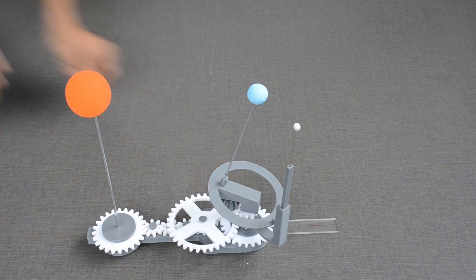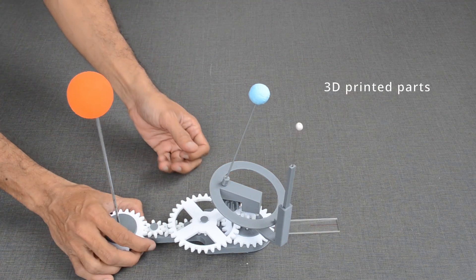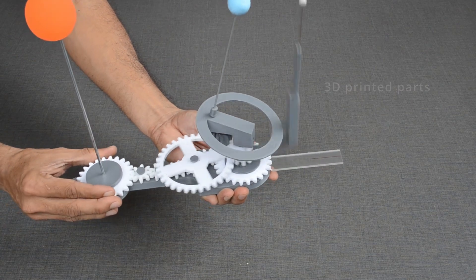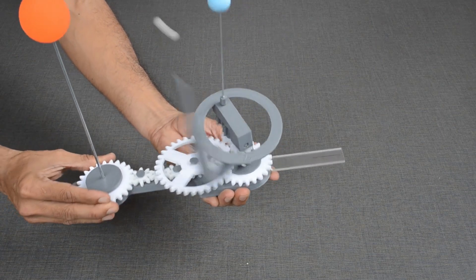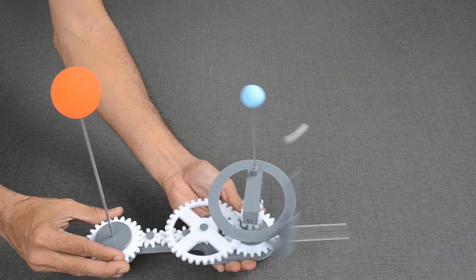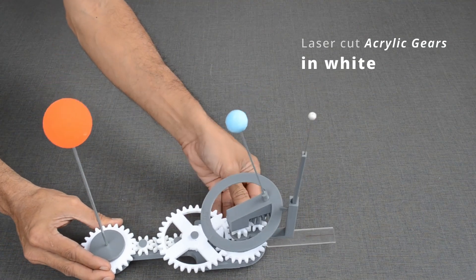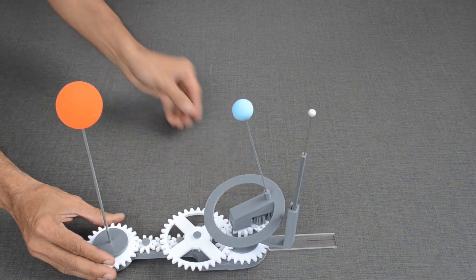This working model of Sun, Earth and Moon is partly built with 3D printed components. I did not get good performance with 3D printed gears, so decided to use laser cut acrylic gears instead.